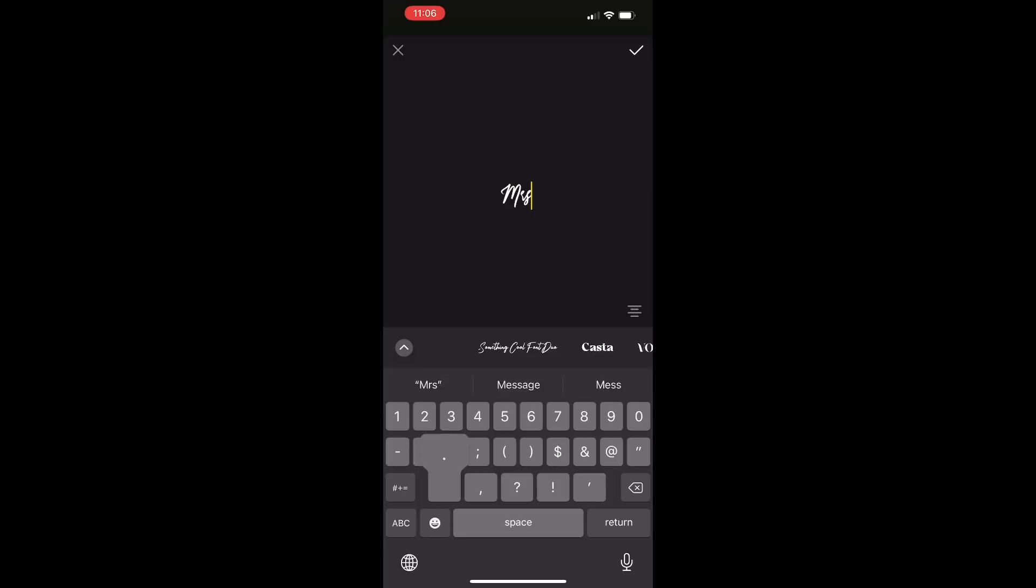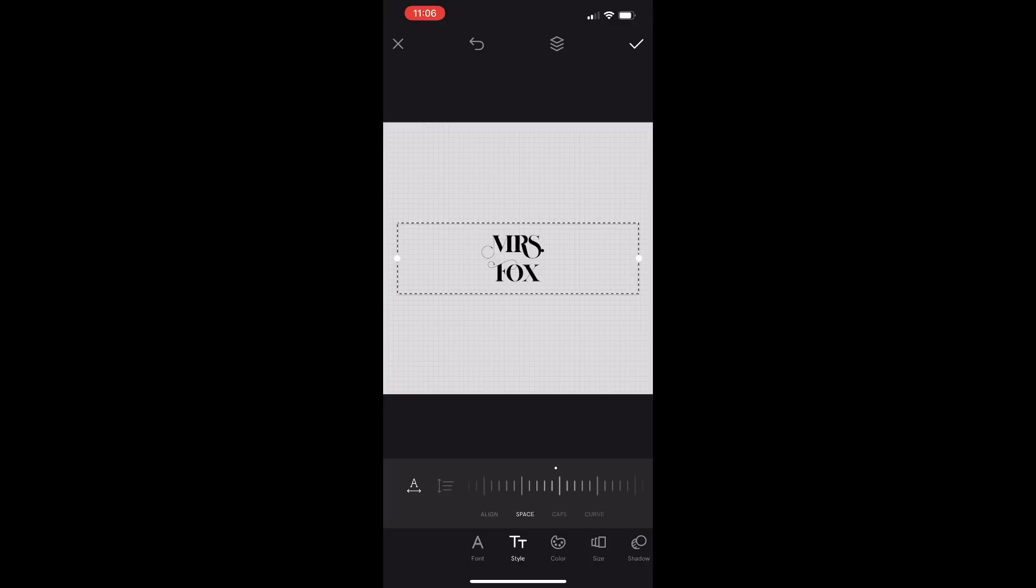Then we are going to add text by clicking that A and I'm going to type in the name. This is Mrs. Fox that we're doing today. I love the Over app because you can scroll through all the different fonts to see what things are going to look like in real time.